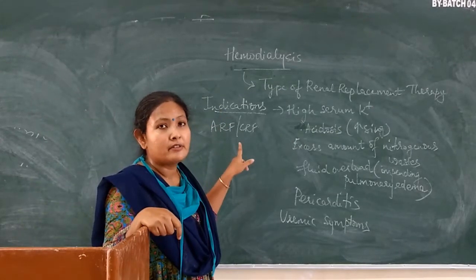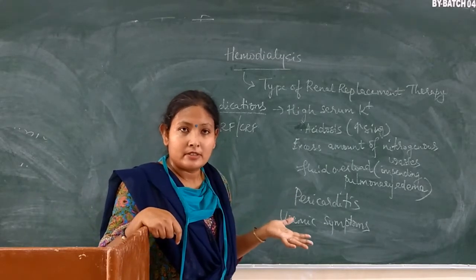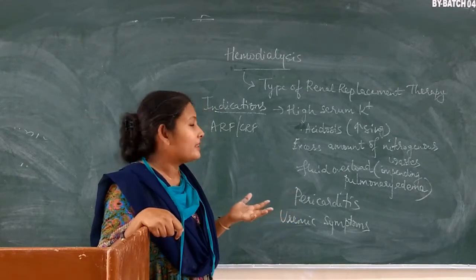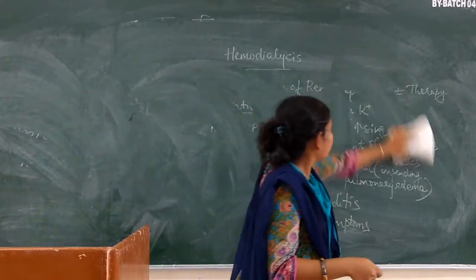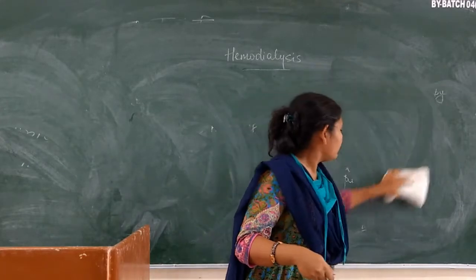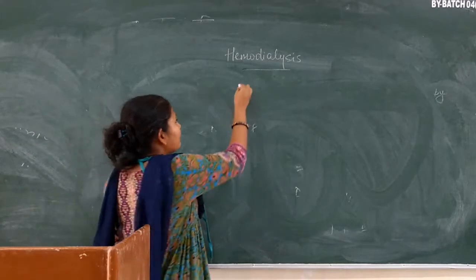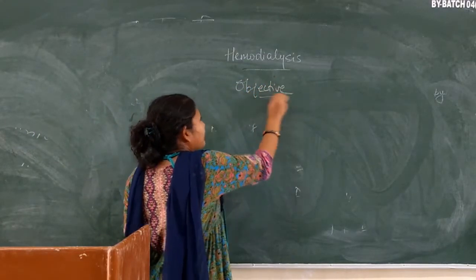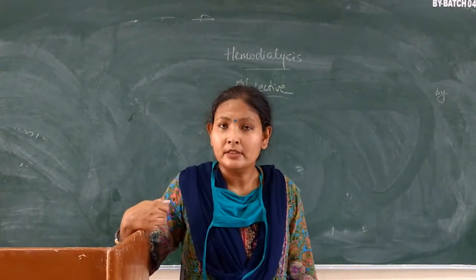To summarize, hemodialysis can be used in acute renal failure as well as chronic renal failure, until any other alternative arrangement is made. The objective of hemodialysis is to remove wastes as well as fluid from the body.